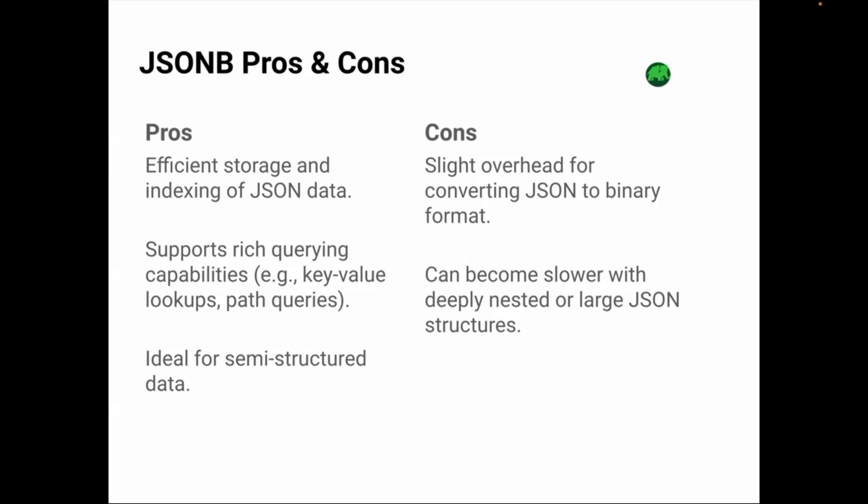Of course, there are some cons to consider. There's a slight overhead when converting regular JSON into the binary format of JSONB — this extra processing can slow things down slightly during insertions. If your JSON data is deeply nested or very large, JSONB can become slower to work with. The more complex the structure, the more PostgreSQL has to work to retrieve and manipulate the data.